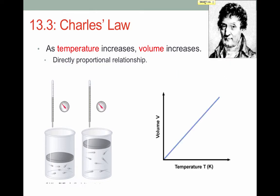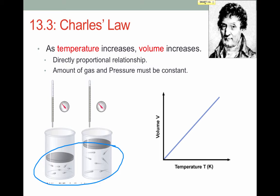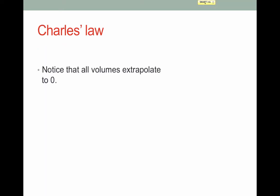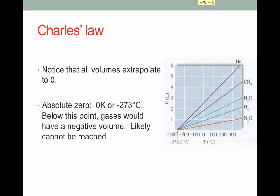Here's a graphical representation, which confirms that we have a directly proportional linear relationship. Note that here the amount of gas, as represented by the number of particles, must be constant, as should the pressure — our pressure gauges show the same reading. Charles' Law is actually the basis for the Kelvin temperature scale. If we graph the volume-temperature relationship of several different gases and extrapolate them all to zero volume, all of them extrapolate to the same point.